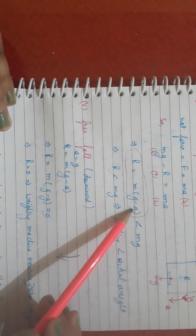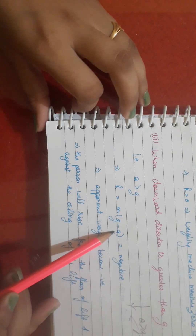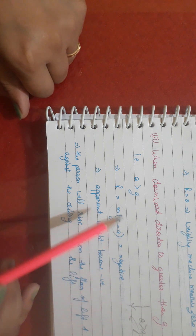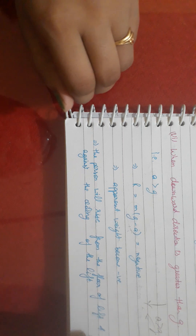The sixth case is when the downward acceleration is greater than g. Using R equals m(g minus a), since a is greater than g, R becomes negative. A negative R means the normal force cannot act downward, so the person will rise from the floor of the lift and crash against the ceiling. Thank you.